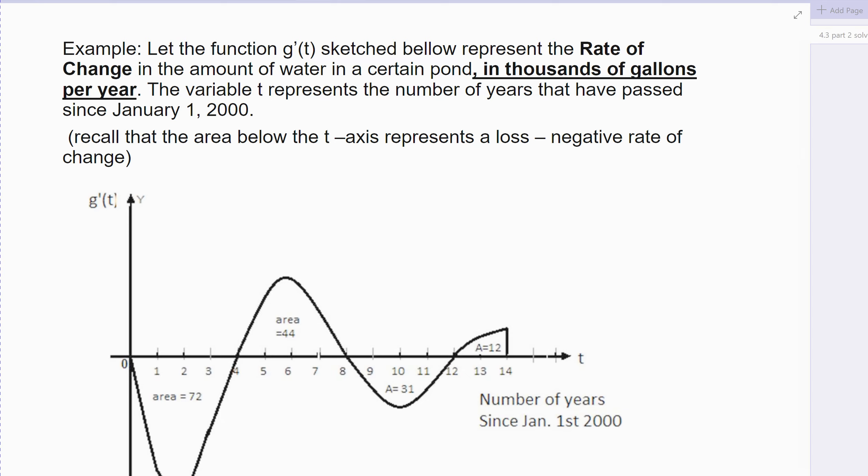g prime of t is the derivative that represents the rate of change in the amount of water in a pond in thousands of gallons per year. So I've got to remember it's in thousands of gallons. The variable t represents the number of years that have passed since January 1st, 2000. Recall the area below represents the loss, and the area above is a positive.